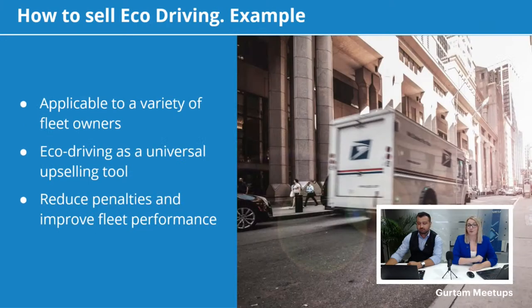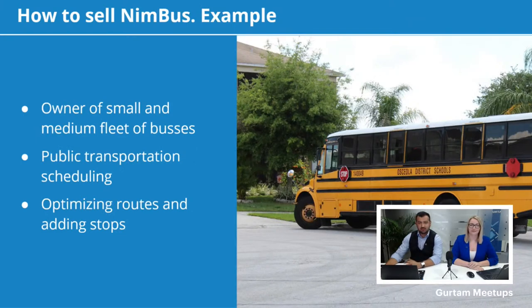Let me also mention the importance of our EcoDriving application. This module is a universal upselling tool applicable to many fleet owners. Many end customers face difficulties with constant penalties for aggressive driving, speeding tickets, and want to improve general fleet performance. EcoDriving has shown real results in helping fleet owners save costs in maintenance and fuel, since it primarily depends on the way the vehicle is being handled. Driver behavior monitoring is indeed a great solution to upsell. We can also see there is a certain demand for public transport scheduling — clients who have a small to medium fleet of buses transporting people across the city may look for basic tracking but are very good targets to upsell our Nimbus solution.